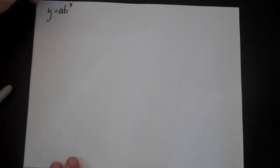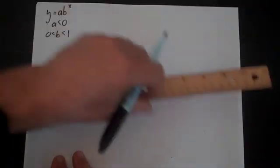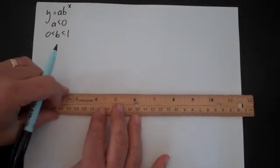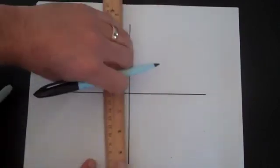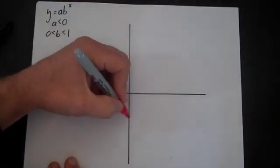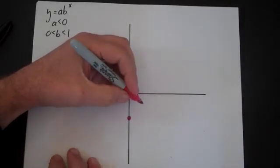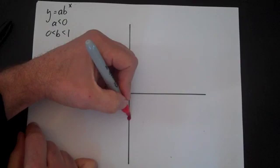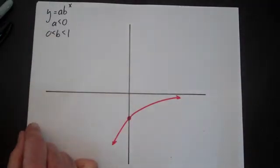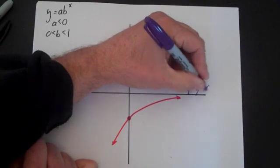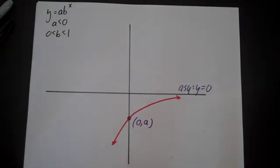For y equals a times b to the x with a negative and b between 0 and 1: this is an exponential decay problem flipped across the x-axis. The initial value is a, which is a negative value. As x increases, y decays — it becomes less and less negative, approaching the asymptote y equals 0 from below. As x goes negative, y moves in a more negative direction. Those are the four forms of the graph.